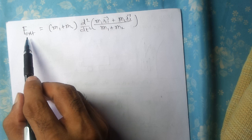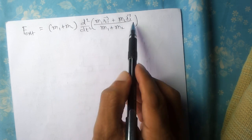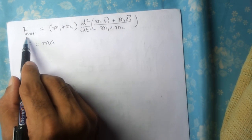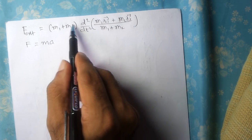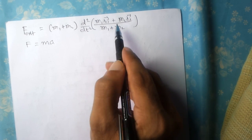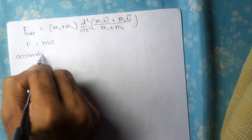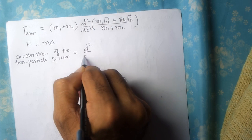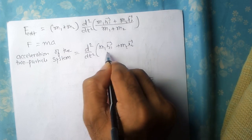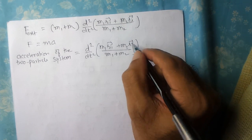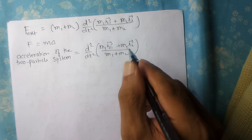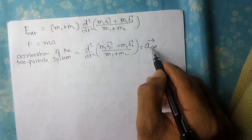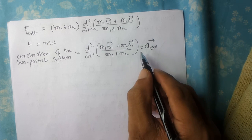So F_external equals (M1 plus M2) times d²/dt² of (M1R1 plus M2R2) upon (M1 plus M2). If I compare this with F equals MA, this is force, this is mass, so this term must be acceleration — specifically the acceleration of the two-particle system, which equals the acceleration of the center of mass. So this entire term is ACM, the acceleration of the center of mass.